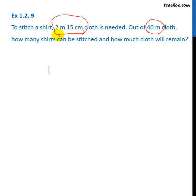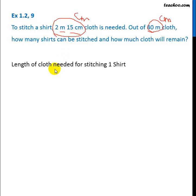Now here we have the cloth in meter and centimeter. So what we do is we convert 2m 15cm into centimeter and we convert 40m into centimeter and then divide both these numbers. Let's do that.